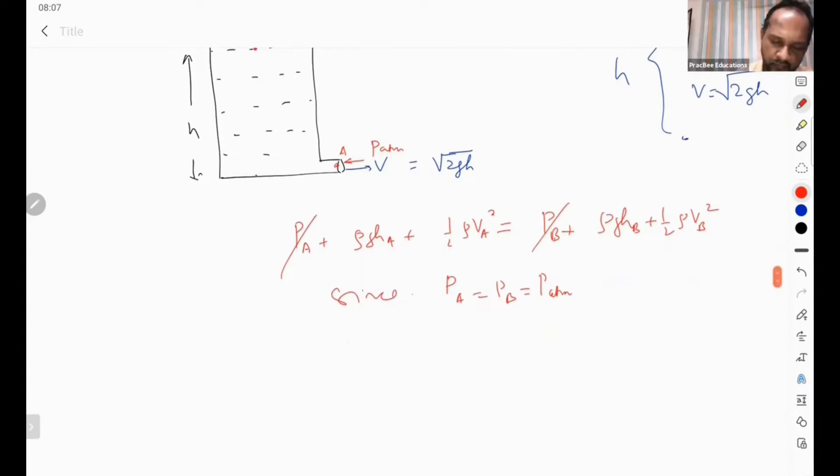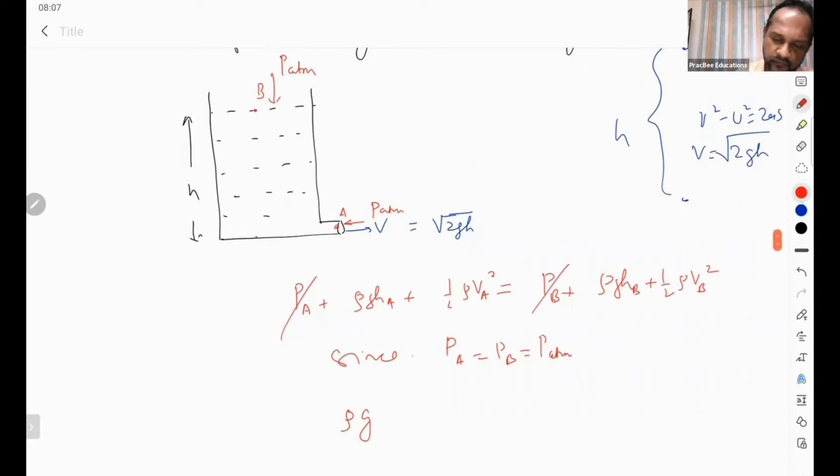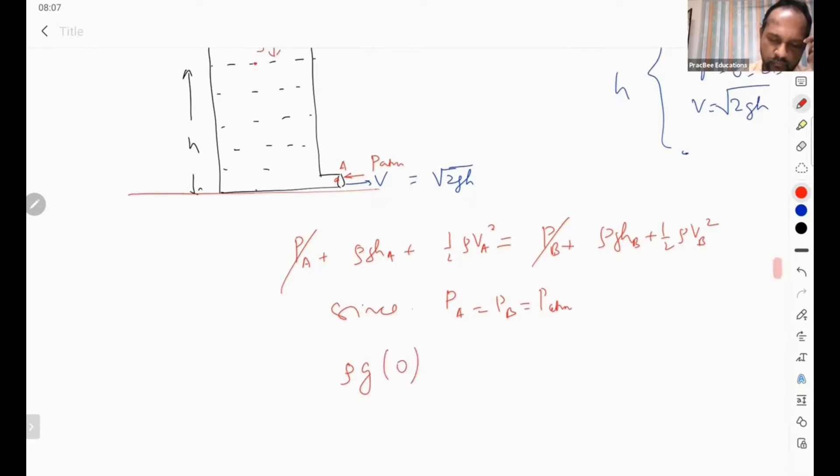Then, so I can have ρg(h_a - h_b). Suppose if I fix the reference frame at this point, if I take the reference frame at this point, so h_a is 0.